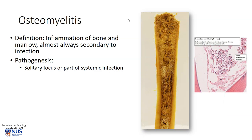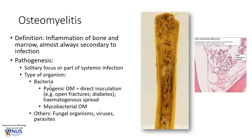Osteomyelitis is defined as inflammation of the bone and marrow and this is almost always due to infection. It can start off as a solitary focus of direct infection in the bone itself, or it can arise as part of systemic infection. There are many different types of organisms that can give rise to osteomyelitis; particularly bacterial infections are quite common, and pyogenic osteomyelitis is one such example.